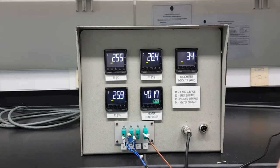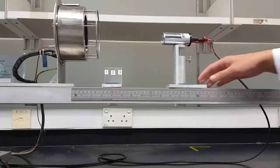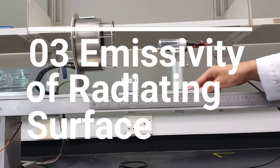For every different distance, we have to take the readings of T1, T4 and also the radiometer. First, we have to adjust it to 20cm.